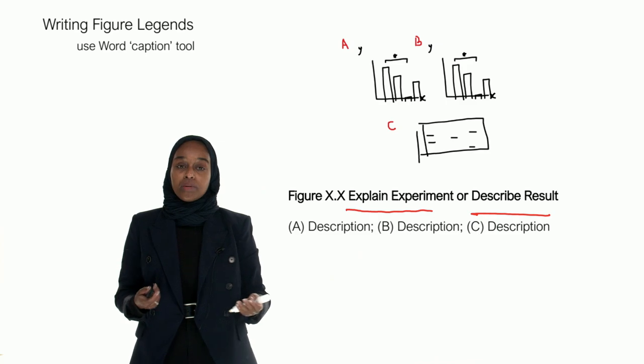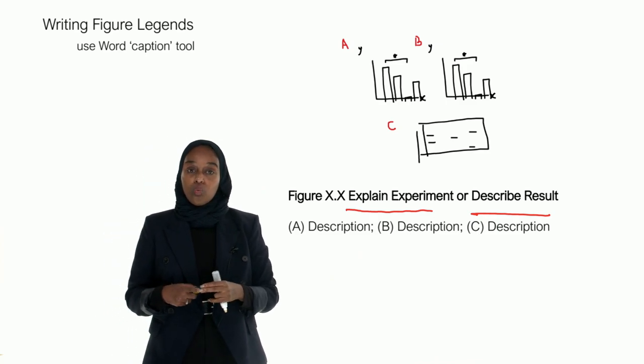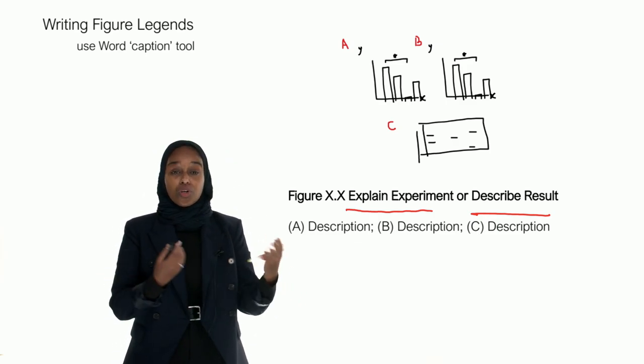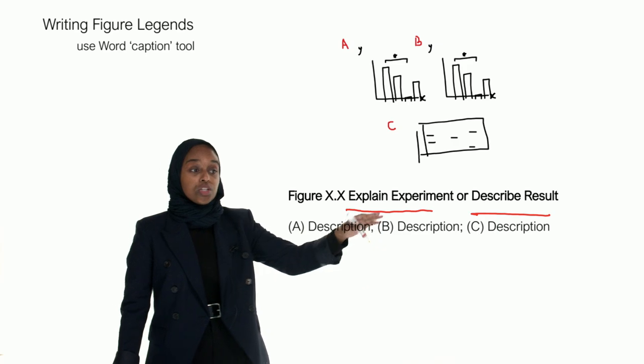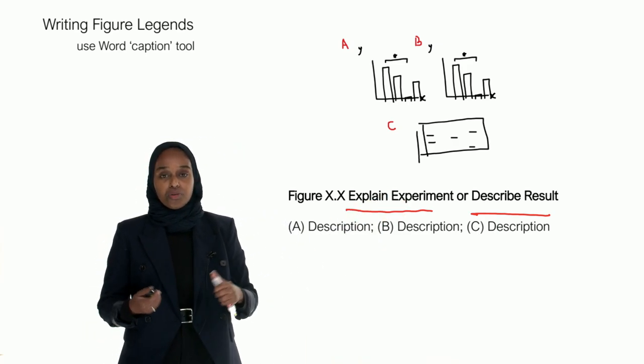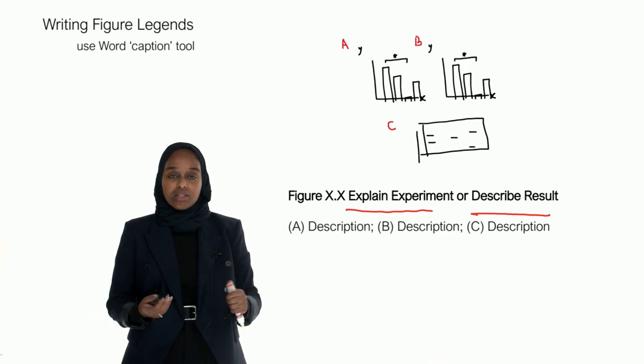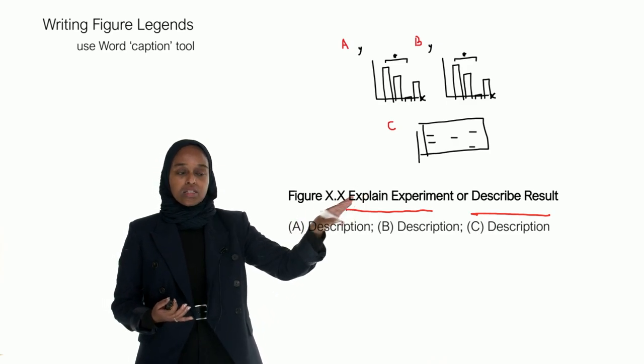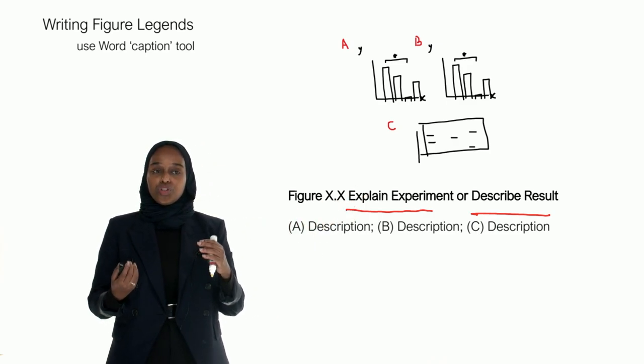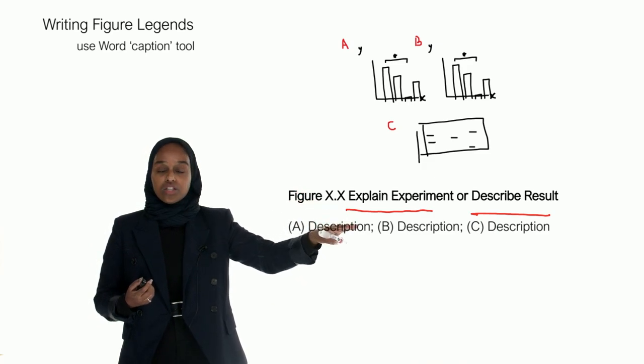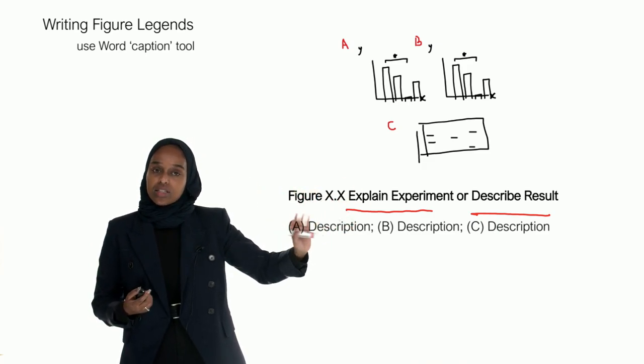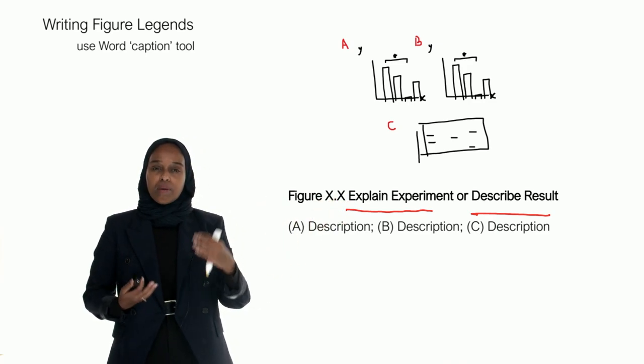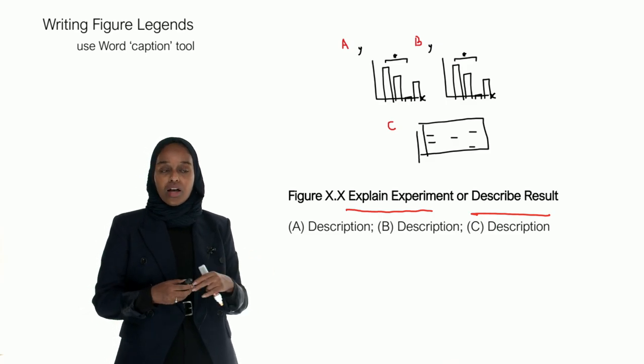So you're either going to explain what the experiment is, so you're going to say something like Western blot for protein depletion for example. So it's just saying this is a Western blot to show protein depletion. Or you can describe the result. You can say something like IQ gap, which is a protein, is significantly depleted after knockdown which says what the result actually is. So it really depends but do stay consistent. If you're using the explanation title type, use that consistently. If you're describing the result, try to use that consistently as well just so the reader expects to constantly see the same type of title.